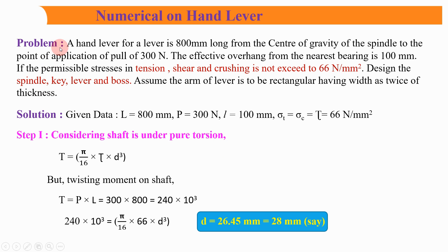Here is the problem. A hand lever is 800 mm long from the center of gravity of the spindle to the point of application of a pull of 300 Newton. The effective overhang from the nearest bearing is 100 mm. The permissible stresses in tension, shear and crushing do not exceed 66 Newton per mm square.